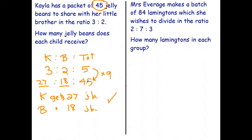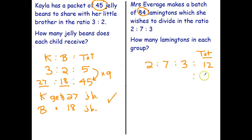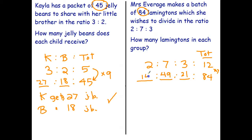Okay, here we already have three parts so I'll just write the ratios: two parts to seven parts to three parts. The total number of parts — I'll put 'total' there to remind us what this last number represents. Nine plus three: there are 12 parts altogether. She has 84 lamingtons in total. Well, 12 times 7 is 84, so we multiply by 7. Three times 7 is 21, seven times 7 is 49, two times 7 is 14.